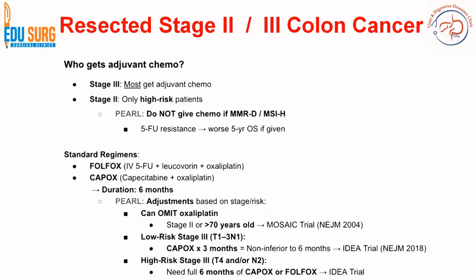For low-risk stage 3 — that is T1-2-3 and N1 disease — 3 months of Capox is non-inferior to 6 months of Capox. This is the IDEA trial, published in the NEJM in 2018.